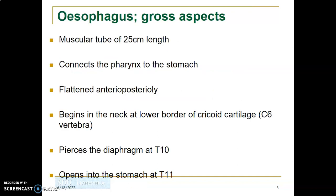The esophagus is a muscular tube 25 centimeters long that connects the pharynx to the stomach. It is flattened anteroposteriorly. The origin of the esophagus is at the neck, as a continuation of the pharynx at the lower border of the cricoid cartilage, at the level of the sixth cervical vertebra (C6).